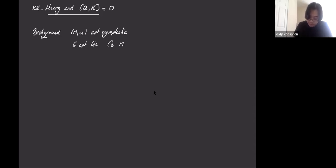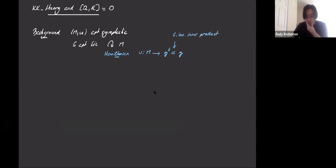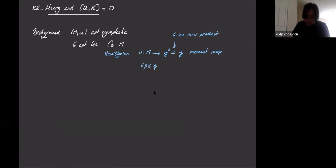Very often G star and G I'll make no difference, so if needed you just identify the two by some G-invariant inner product. So you have a moment map like that. What does it mean to be a moment map? The definition is that if you take any element beta in the Lie algebra, you're interested in looking at the pairing between mu and beta and its differential. You'd like to have some compatibility between that and your symplectic form.